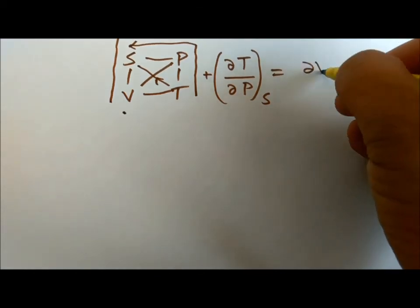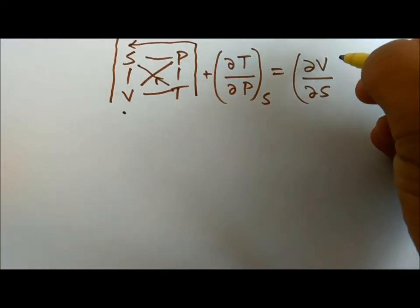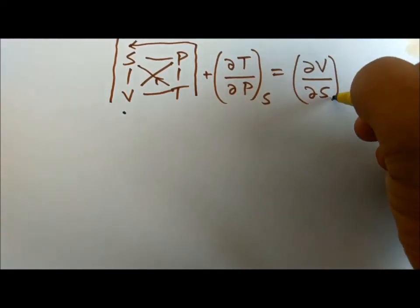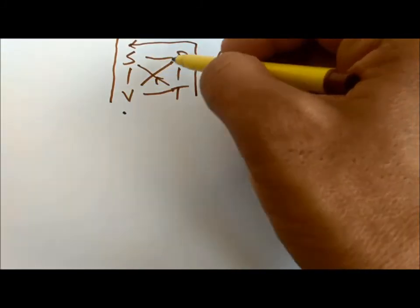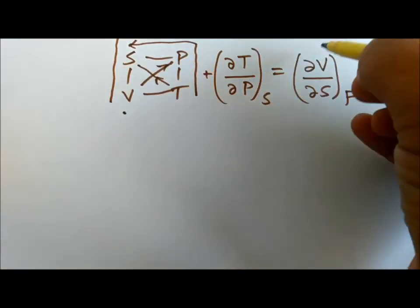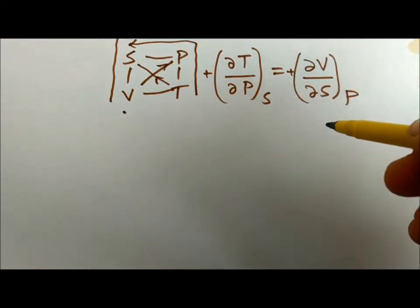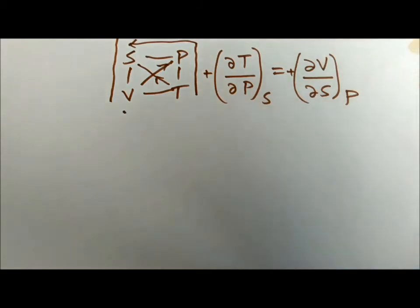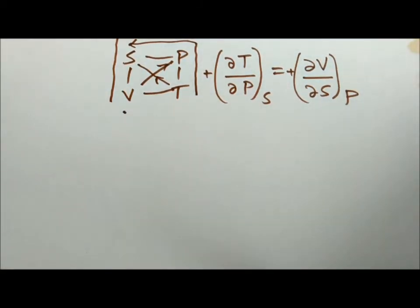We go from V to T at constant T, and when we go from V to P the arrow goes up so it is with a plus sign. This is Maxwell's fourth relation. So these are the four Maxwell relations.